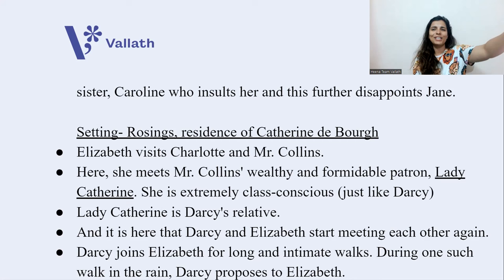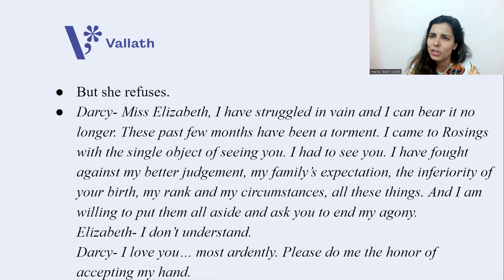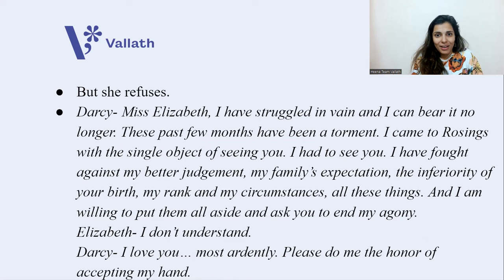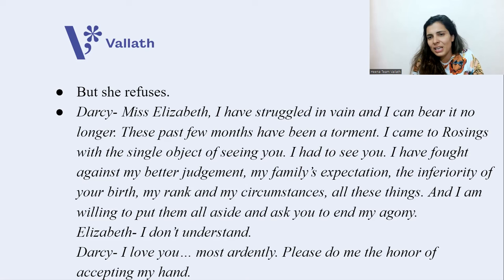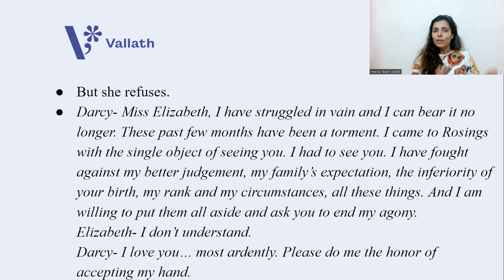Elizabeth and Darcy go on long and intimate walks together in nature. But even till now, Elizabeth does not like Darcy. During one such conversation in the rain, Darcy proposes to Elizabeth. His words: 'Miss Elizabeth, I have struggled in vain and I can bear it no longer. These past few months have been a torment. I came to Rosings with the single object of seeing you. I have fought against my better judgment, my family's expectation, the inferiority of your birth, my rank and my circumstances — all these things — and I am willing to put them all aside and ask you to end my agony.'